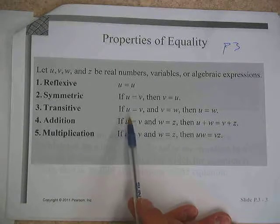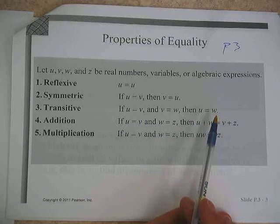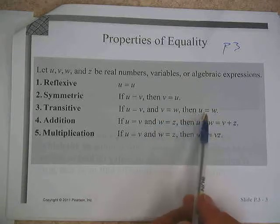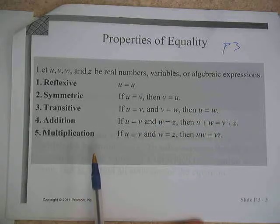And also the transitive property: if u equals v and v equals w, then it must be true that u equals w.